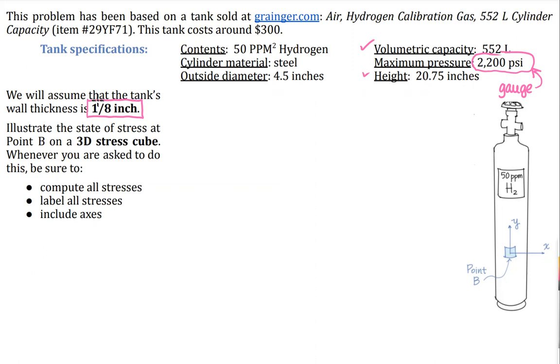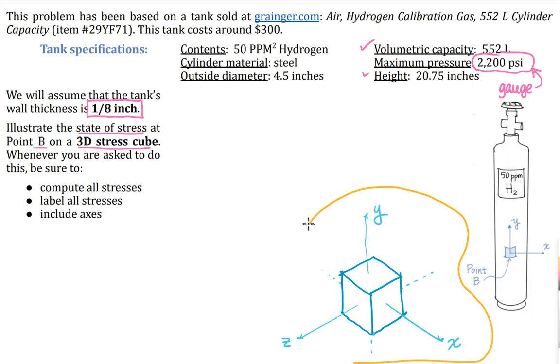What we want to do in this problem is illustrate the state of stress at point B on a three-dimensional stress cube. And I'm going to draw that cube right here. I'm going to make the coordinate system match up to what we see there. So I'm going to pick this direction to go x, this direction to show what's happening with respect to y, and z is going to be going in that direction. So we have our three axes shown on our three-dimensional stress cube, and that is where we will end up showing our solution to this problem.